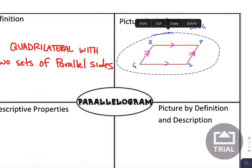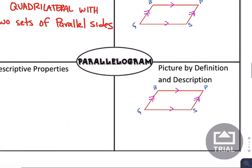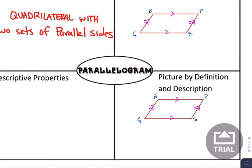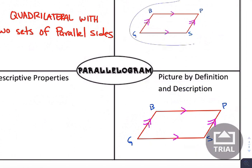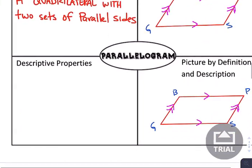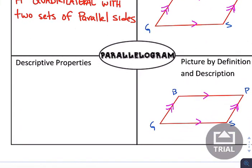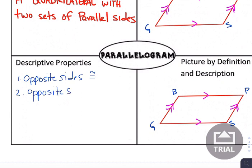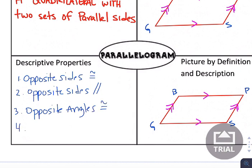Because you have a parallelogram, and we're starting to work with more specific things like parallel sides, we're going to have a lot more going on in terms of properties. The first thing: opposite sides are congruent. Second thing: opposite sides are parallel. Third thing: opposite angles are also congruent. And the fourth thing: adjacent angles are going to be supplementary.